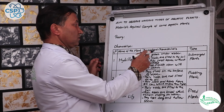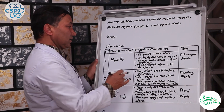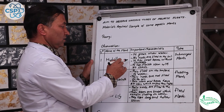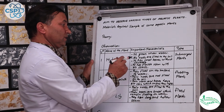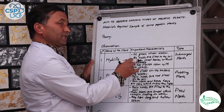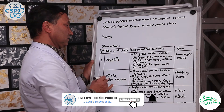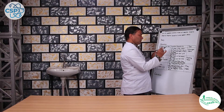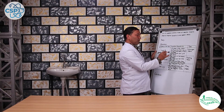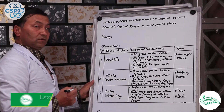It grows underwater. It has flexible leaves without stomata. The fourth character: it has a flexible stem with air spaces.